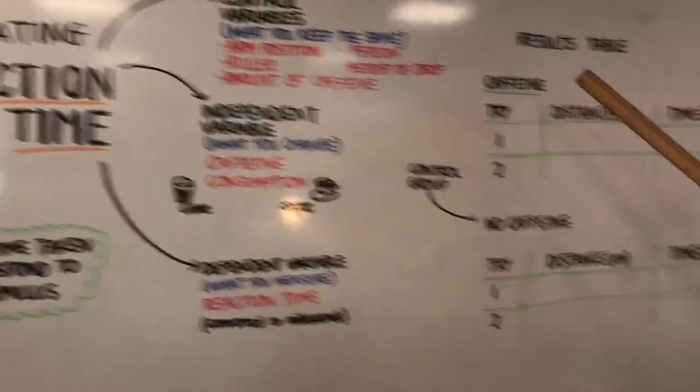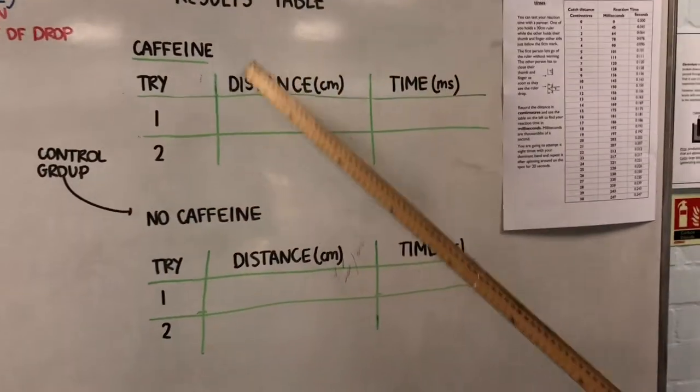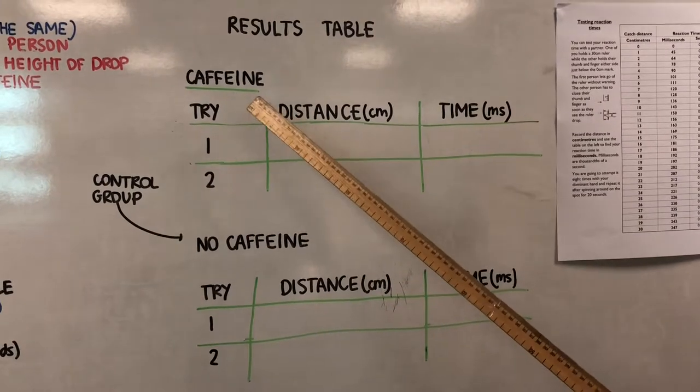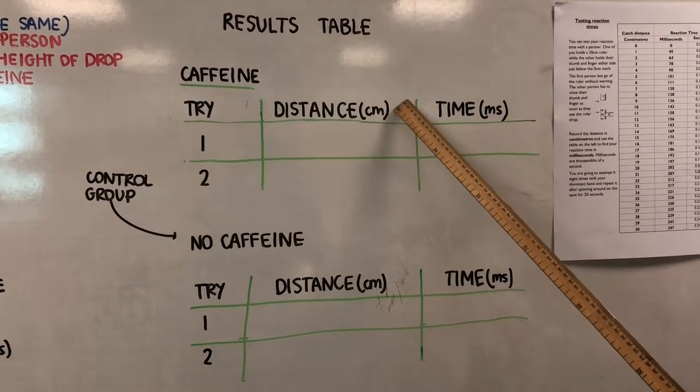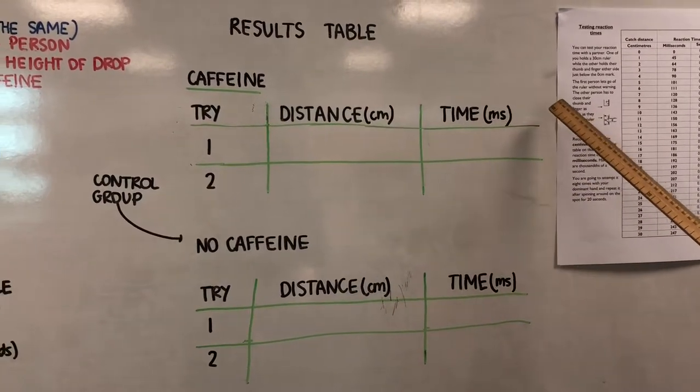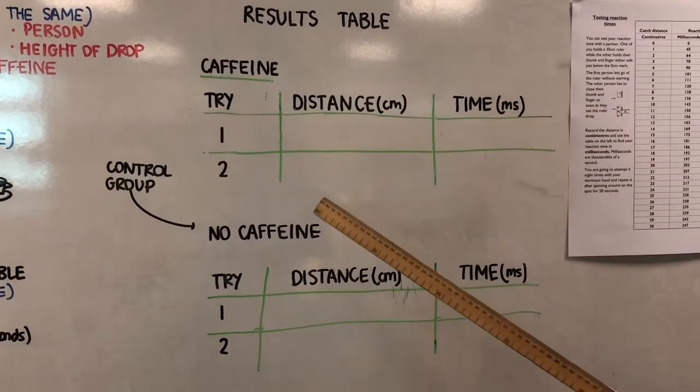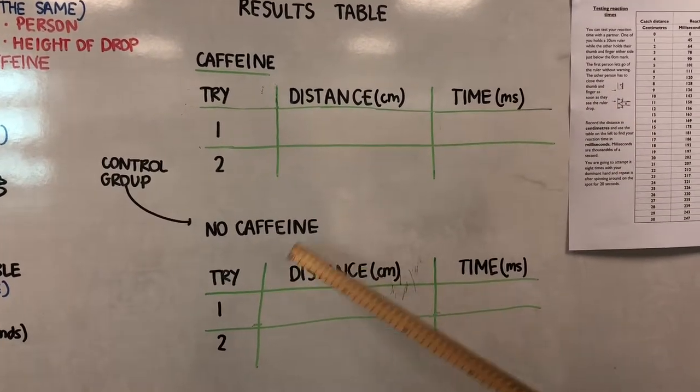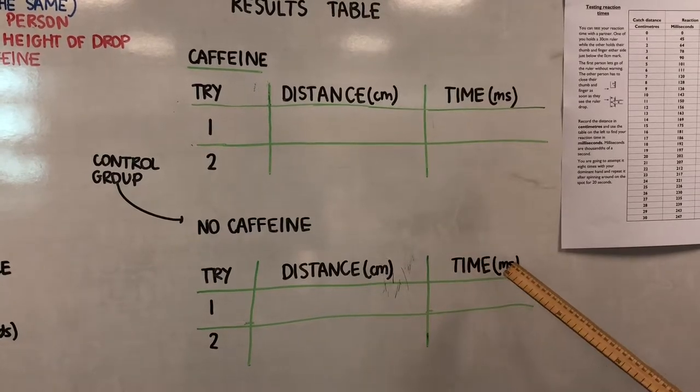We're going to pan to the results table. Here we have caffeine and no caffeine. We have our tries in the left-hand column, followed by distance and then time in milliseconds, which we're going to convert once we've got our results. Then we have no caffeine and the same: try, distance, and time in milliseconds.